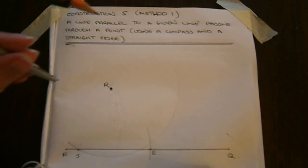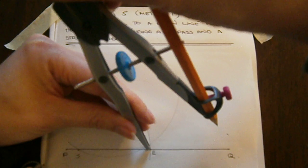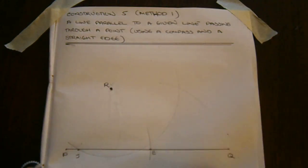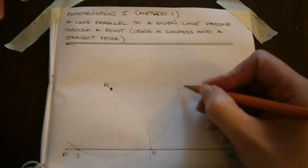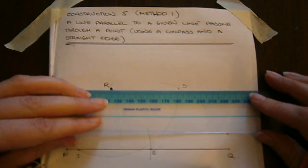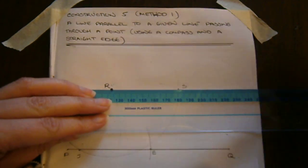We then swing a new arc from our point E so that it intersects with our first arc. We label this intersection point S. We can now draw a line using our straight edge between R and S.